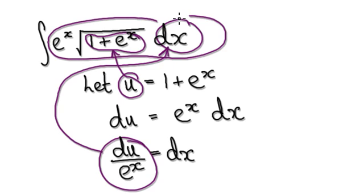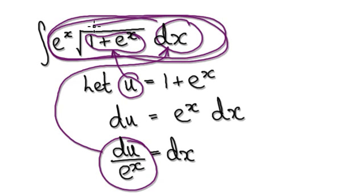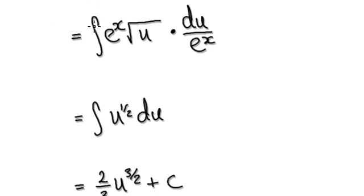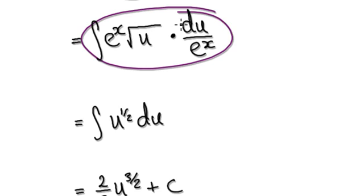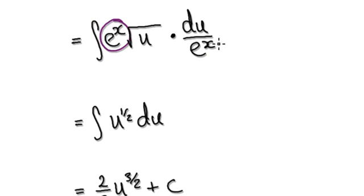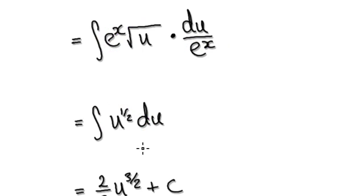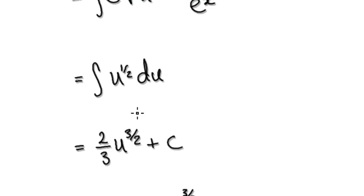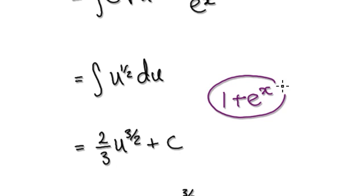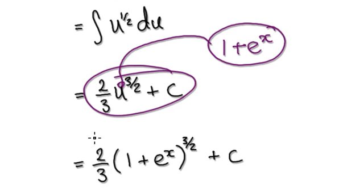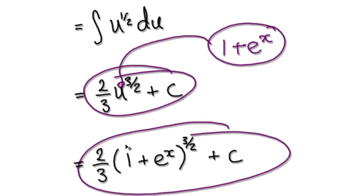Leave it as it is for the time being. So this whole thing here will then become this. Now this thing will cancel out with this thing here, leaving u with this. So now integrate this to give you this. And then earlier we said let u be 1 plus e to the power of x, so we can now put this into the u. So this whole thing here will then become this — this is your final answer.